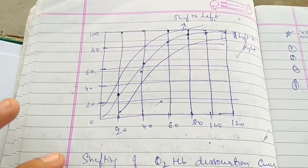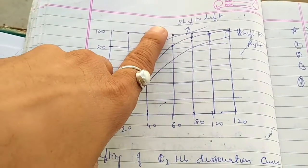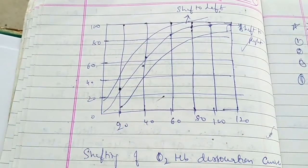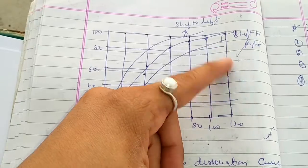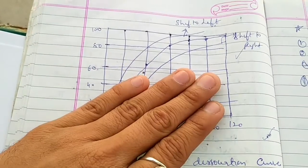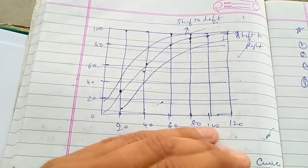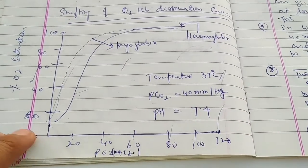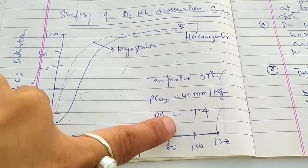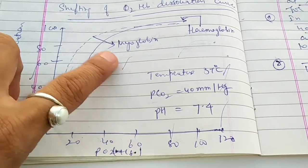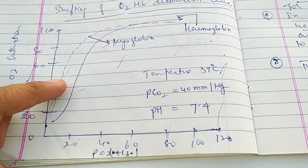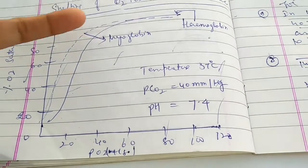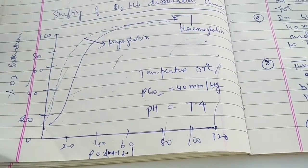Myoglobin does not show the Bohr effect. Even at a partial pressure of 40 mmHg, myoglobin is 95% saturated. Its dissociation does not follow the same trend as hemoglobin. When the curve shifts to the left, it means more dissociation and oxygen is readily available to the cell; a shift to the right means the oxygen is tightly bound. Left shift corresponds to the Bohr effect; right shift corresponds to the Haldane effect. Myoglobin shifts more to the left than hemoglobin, due to differences in their composition and structure.